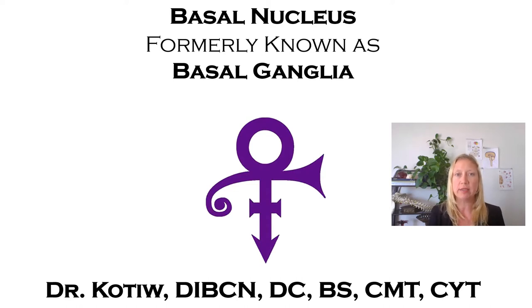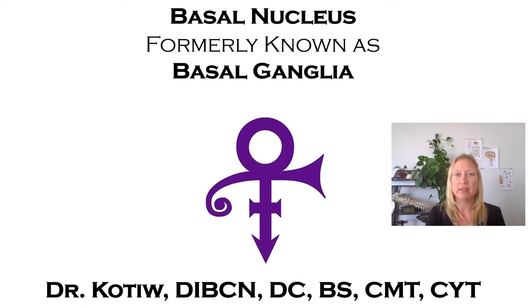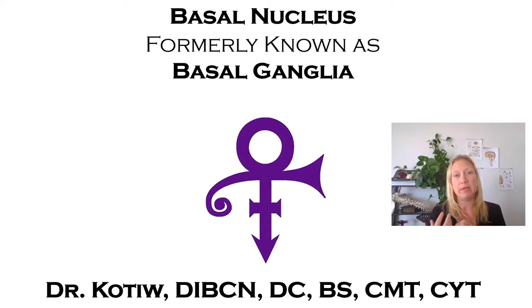One easy way to remember this is the dorsal root ganglion — that always reminds us it is peripheral. So we use ganglia for peripheral, and nucleus is saved for our central nervous system cell bodies. These terms are one and the same; you'll see basal ganglia and basal nucleus used interchangeably. Don't think they're two different structures — it's just tough to switch over solely to using basal nucleus.